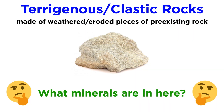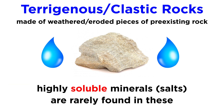Now think about which minerals you would least expect to find in a terrigenous sedimentary rock. What sort of chemical properties might they have? Not surprisingly, the most soluble minerals — the salts — are rarely ever found as clastic sediments. This includes all the evaporite minerals.